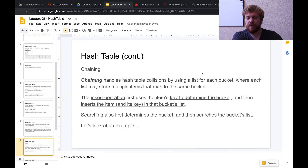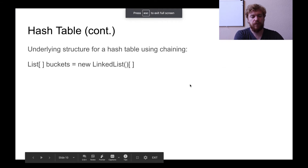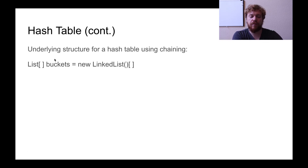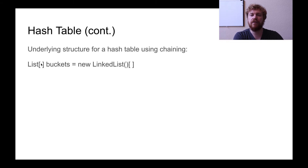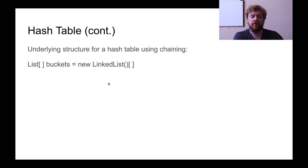The underlying structure for a hash table using chaining is an array of lists. Here's what that might look like — I'm specifying the List interface, and it's going to be an array of lists, in this case called buckets. What I'm instantiating here is an array of linked lists. There is some missing information: what is each linked list going to hold? Presumably we want something that can hold a key and a value pair.